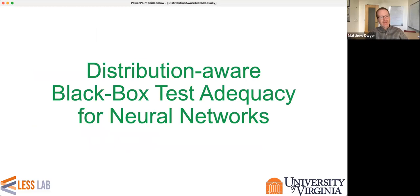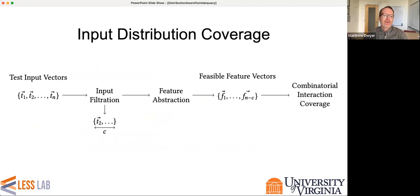This leads to our work on distribution aware black box test adequacy for neural networks. Black box adequacy criteria focus on the input space — precisely what we do with input distribution coverage, or IDC. At a high level, IDC takes test input vectors, first filters out vectors that shouldn't count towards coverage — such as out-of-distribution data — then performs feature abstraction, which converts test input vectors into feasible feature vectors. Once we have the feature vectors, we apply existing combinatorial interaction coverage metrics to compute a ratio reported as the IDC coverage.